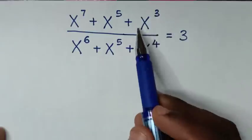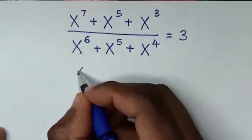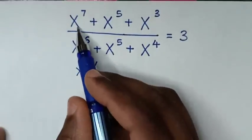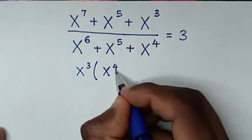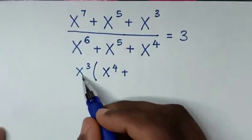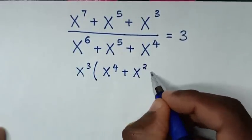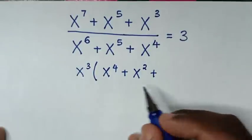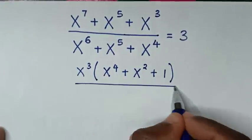From here, x to the power of 3 is the lowest power. We take x³ out of the bracket in the numerator: x⁷ divided by x³ is x⁴, plus x⁵ divided by x³ is x², plus x³ divided by x³ is 1, close bracket.